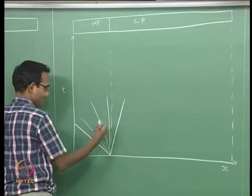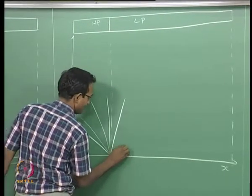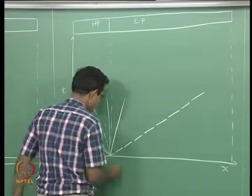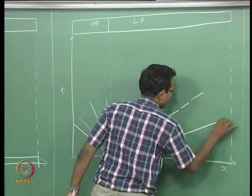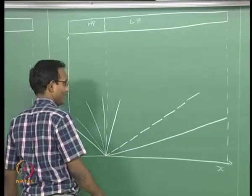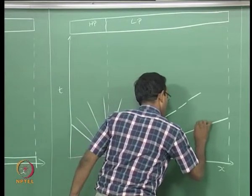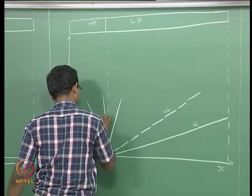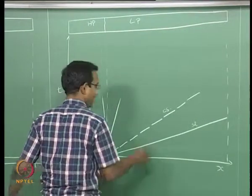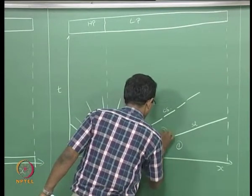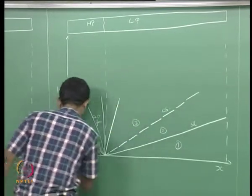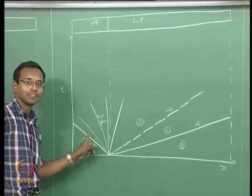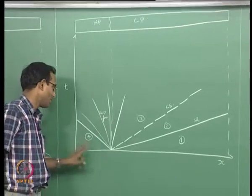This is all expansion fans, and I am going to have a contact surface moving like this, and a shock which induced all these motions in the low pressure section moving like this. This is my shock, this is my contact surface, and this is my expansion fan. We are going to label 1, 2, 3, and 4. Notice that we do not label anything inside the expansion fan — we will label only 3 or 4, nothing in the middle.